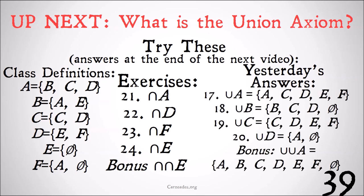Here are yesterday's answers. The union of A is simply the class of {A, C, D, E, F}. To get the union of A, we take the members of B, C, and D. From B we add A and E; from C we add C and D; from D we add E and F. That gives us all the members.